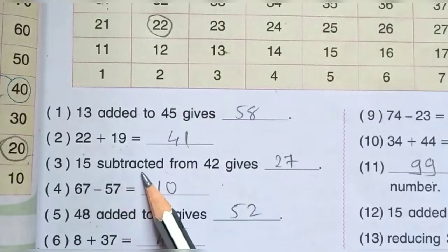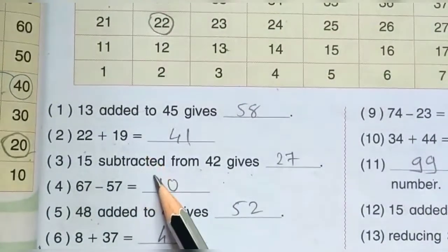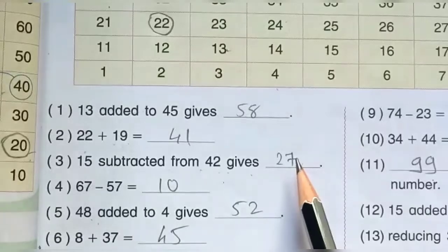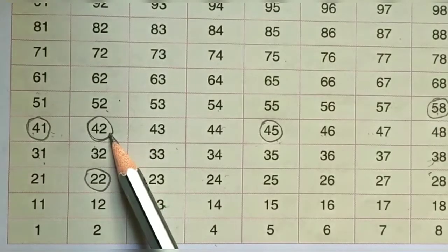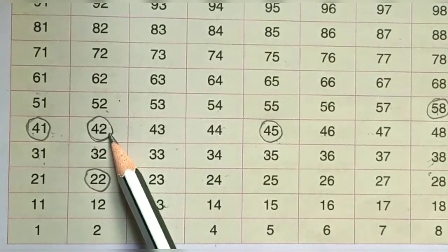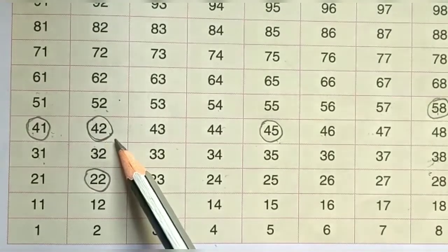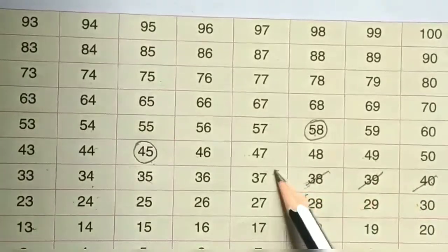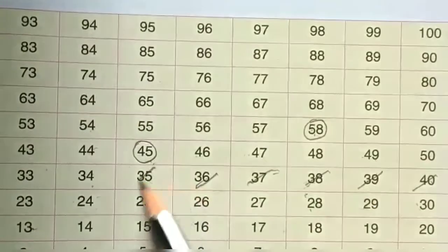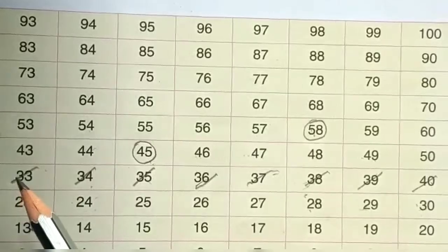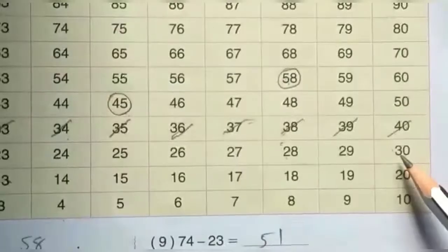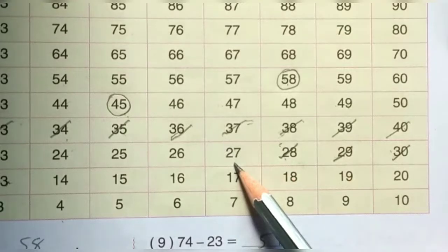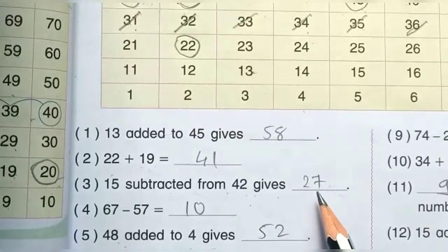Third one: 15 subtracted from 42 gives. Subtract यानि minus — 42 minus 15 is equal to 27. तो हम tables में count करेंगे, 42 number दिये हुए, first of all उस पे circle करेंगे. Subtract के लिए हम आगे वाले से cut करेंगे, यानि count backward — 15 cut करेंगे. Counting 1 through 15 — 15 cut हो गए, next number है 27. तो answer है 27. 42 minus 15 is equal to 27.